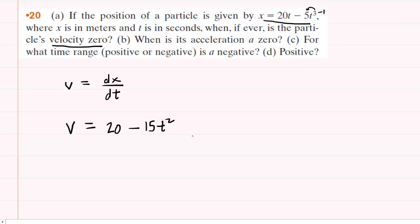So now we simply note that the velocity has to equal zero, so we're going to set the velocity equal to zero, and then we're going to solve for t.